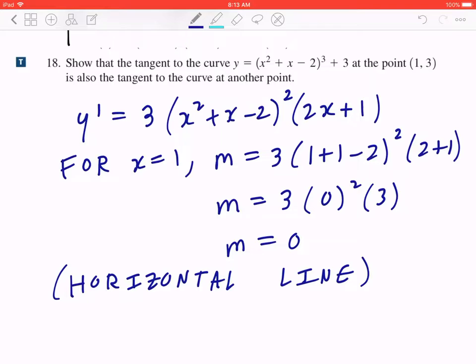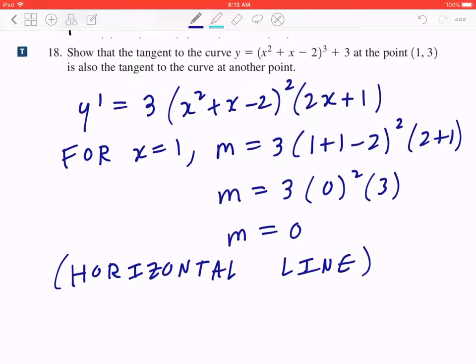Now because it's a horizontal line and if you look at the function, it's a cube plus 3, there might be a second point with exactly that slope. So you have to go back and solve for the second value of x.